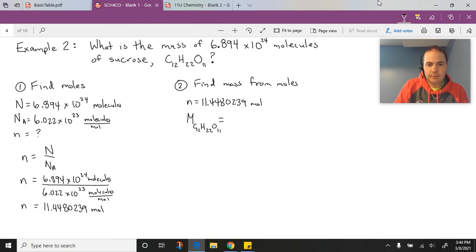So let's figure that out. We know we're going to have 12 times the molar mass of carbon plus 22 times the molar mass of hydrogen plus 11 times the molar mass of oxygen.